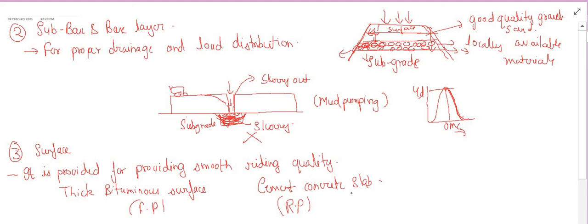For a flexible pavement, we provide a thick bituminous surface as the surface course, and for a rigid pavement, we provide a cement concrete slab as the top surface. So to summarize: the subgrade bears and distributes load to the natural ground; the subbase and base layers provide drainage and assist load distribution; and the surface course provides smooth riding quality. Thank you.